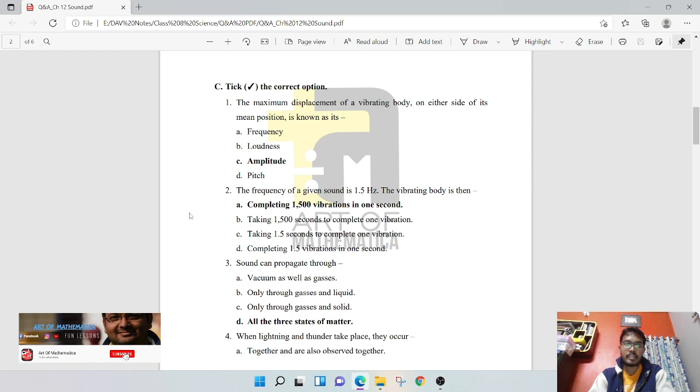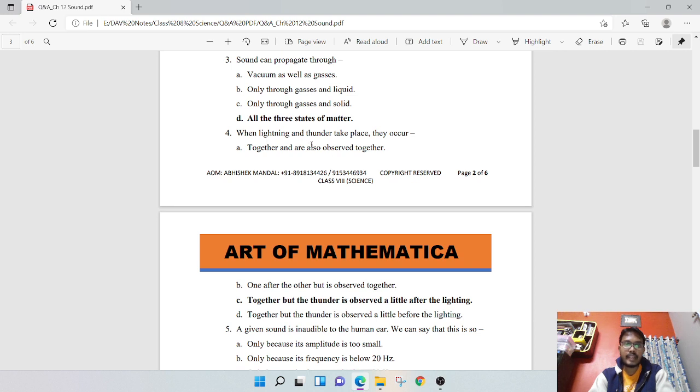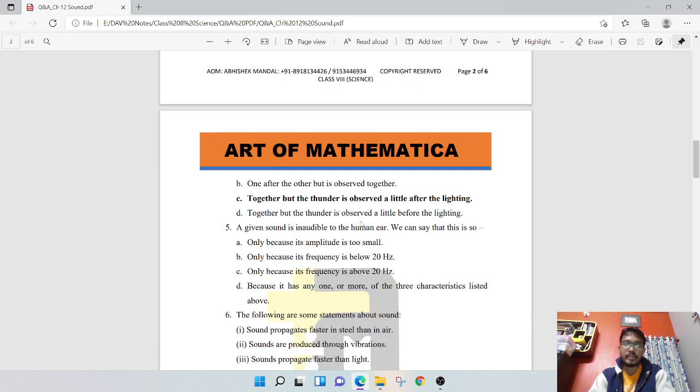Sound can propagate through all the three states of matter - vacuum as well as gas, gases and liquid, gases and solid. When lightning and thunder take place they occur together but thunder is observed a little after the lightning, because the speed of light is greater than speed of sound, so we see the light first, then we hear the sound of thunder.